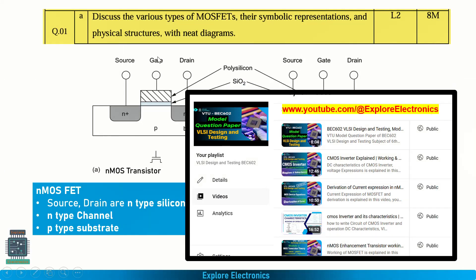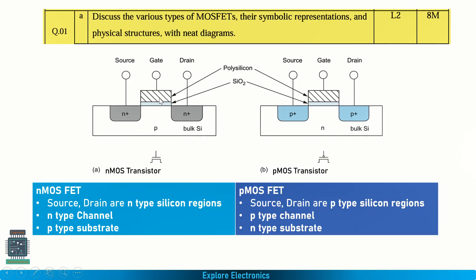The very first question — a very important question — is: discuss various types of MOSFETs and their symbolic representation and physical structure with a neat diagram. You may also get a question like 'explain the working of MOSFET.' One question will be there on the physical structure and the working. Here they have asked the physical structure and the symbolic representation. You should know how the MOSFET structure will be.